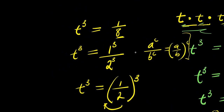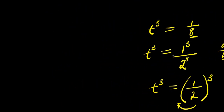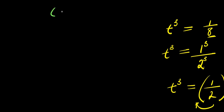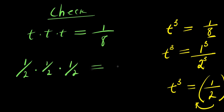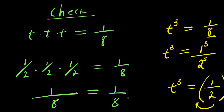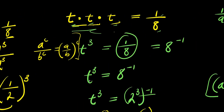Now if you want to verify, remember the problem is t times t times t equals 1 over 8. Let's insert 1 over 2: we have 1 over 2 times 1 over 2 times 1 over 2. This equals 1 times 1 times 1 divided by 2 times 2 times 2, which is 1 over 8. This solution has satisfied the equation.